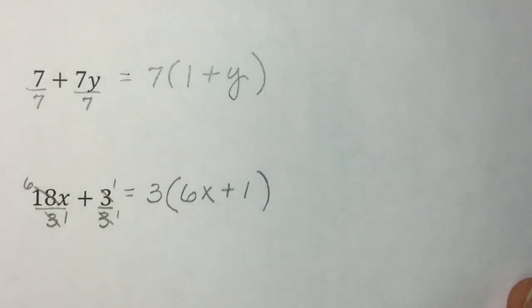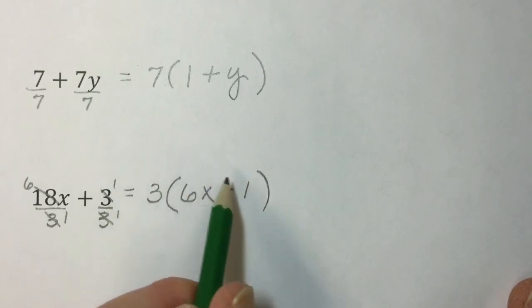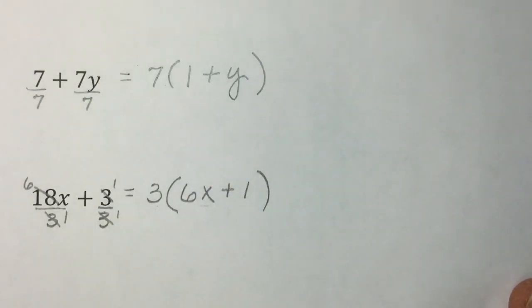And again, to check whether we've done this correctly, distribute the multiplication, 3 times 6X is 18X plus 3 times 1 gives us 3.